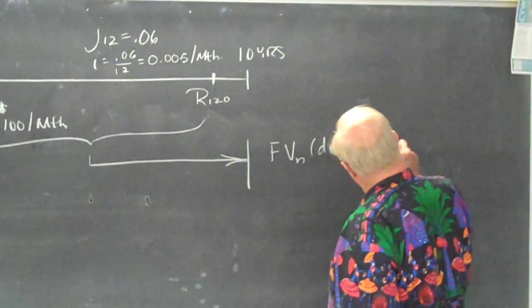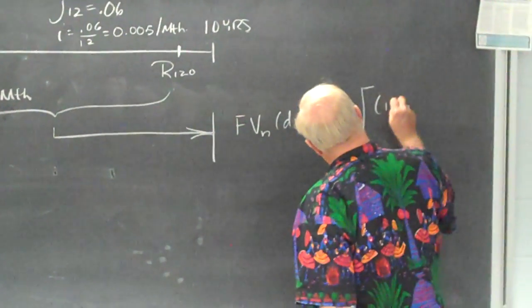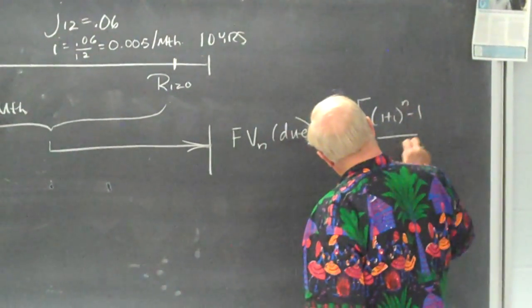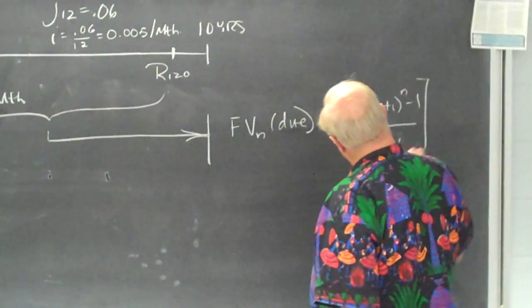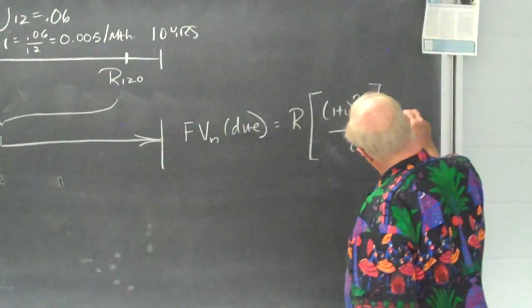So it's going to be R, or the payment, times 1 plus i to the N minus 1 divided by i. And because it's due, we will add the 1 plus i.